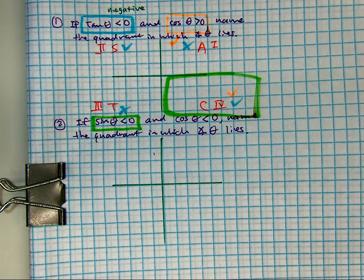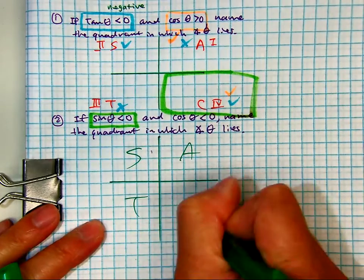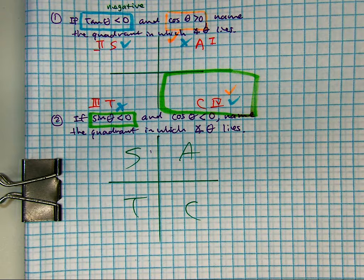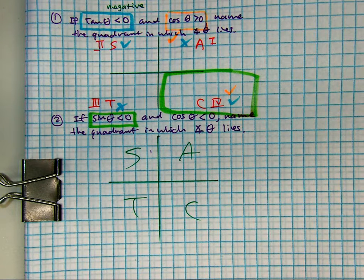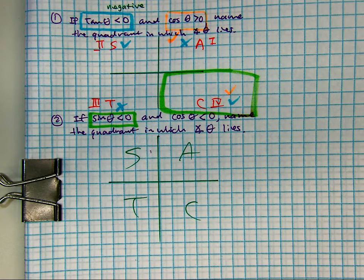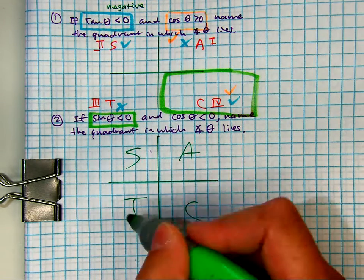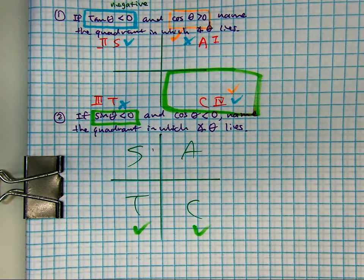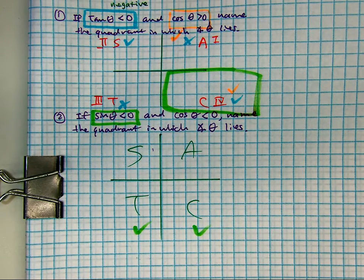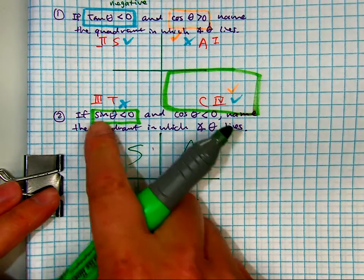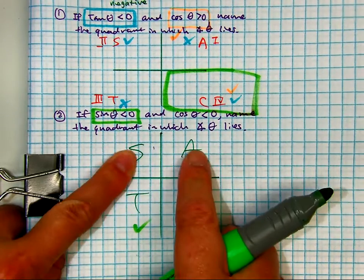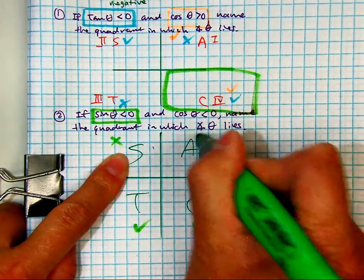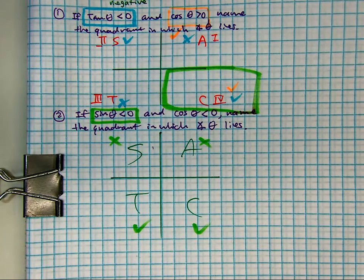Where is cosine negative? Correct. Remember, if you're getting stuck on these, a good way of thinking about it is where is sine positive? That's these two. But we're not looking for positive, so I'm going to put x's here. Not here. X's means no.